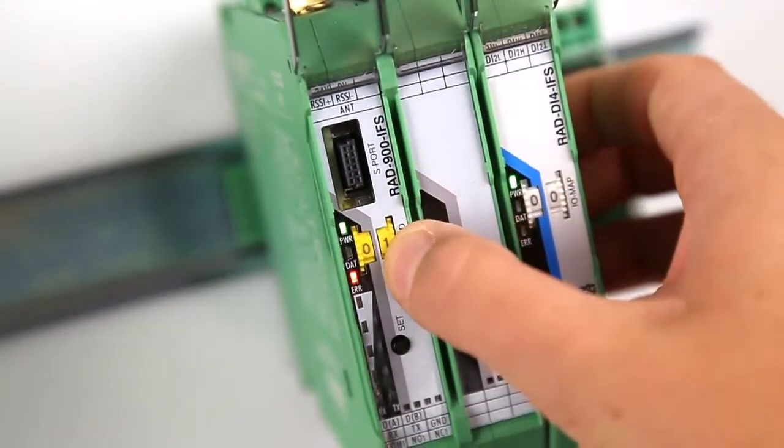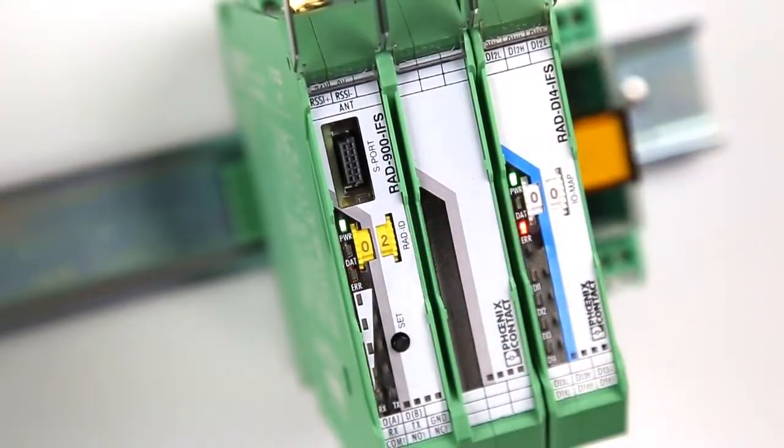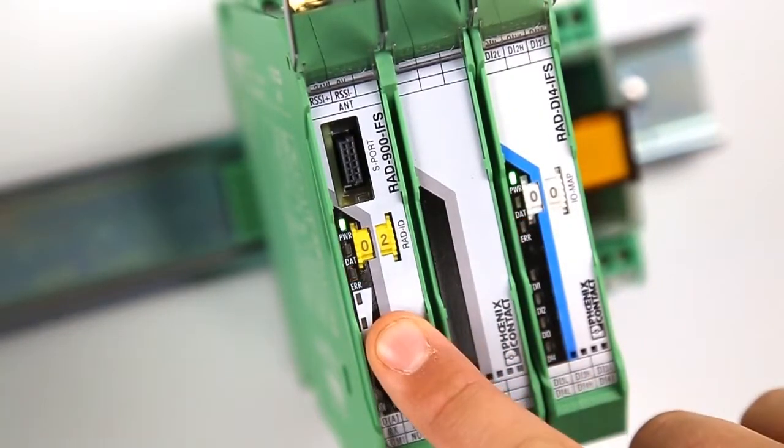We're going to configure the slave by setting the yellow thumb wheel to 02. To read in the thumb wheel setting, press the set button for one second.